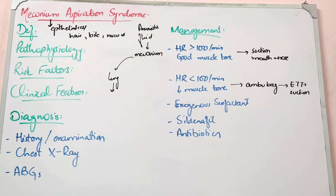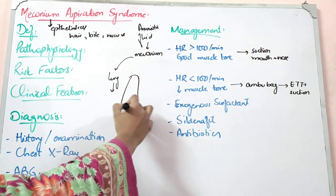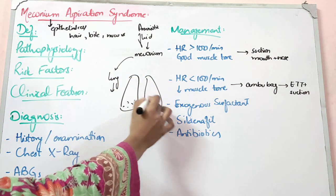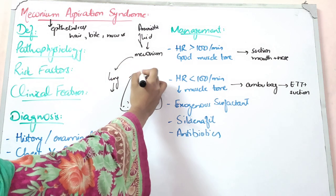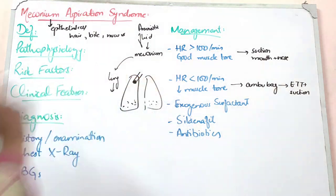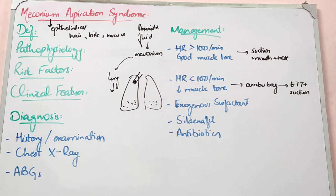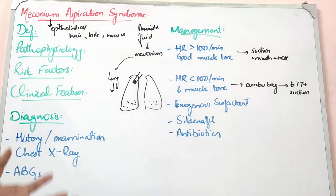Aspiration means the lungs can be damaged. You can also develop pneumonia or partial obstruction. In early intra-uterine life, meconium is not produced as much. This is because the gastrointestinal tract is immature. So meconium is not a major concern in early intra-uterine life.